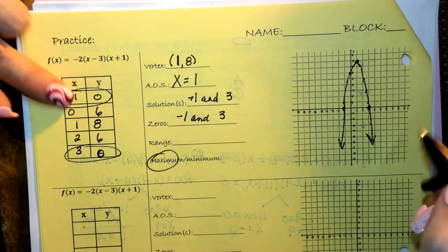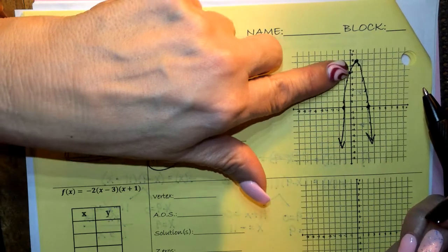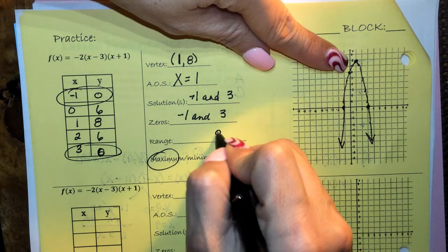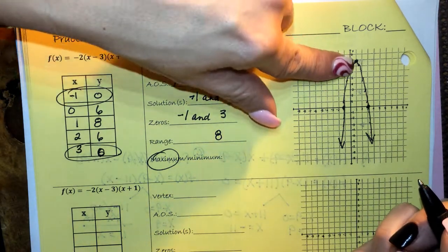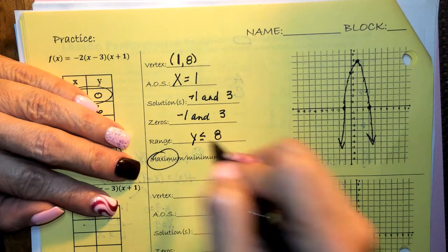Okay, so it's something like that. So the range, I'm looking at the y value. Y is always down here. So the highest y value is 8. The highest I go is 8. My y value is always less than 8. It never gets above 8. So I'm just going to say y is less than or equal to 8.